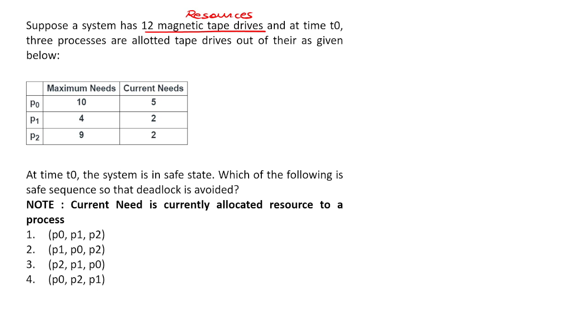Three processes are allotted tape drives out of there as given below. So here we have three processes P0, P1, and P2. Our system's maximum need is: for process P0 maximum need is 10, process P1 maximum need is 4, and for process P2 it is 9.